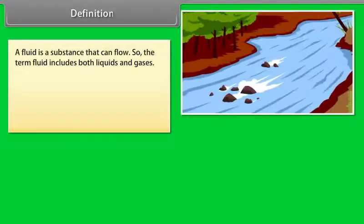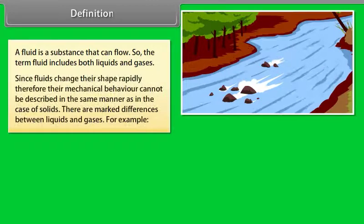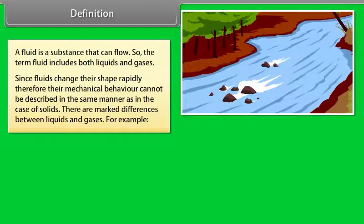Definition. A fluid is a substance that can flow. So, the term fluid includes both liquids and gases. Since fluids change their shape rapidly, their mechanical behavior cannot be described in the same manner as in case of solids. There are marked differences between liquids and gases.